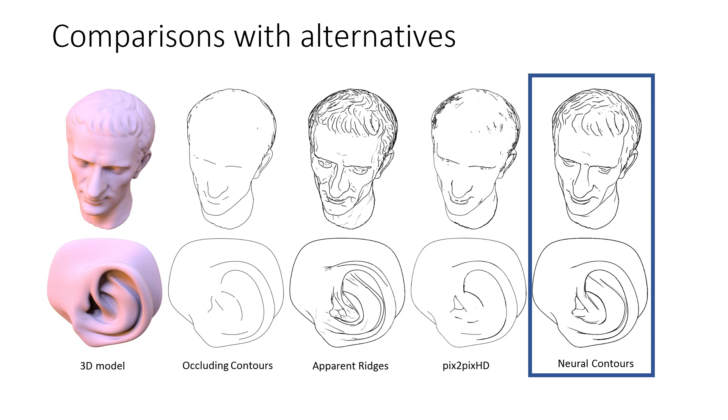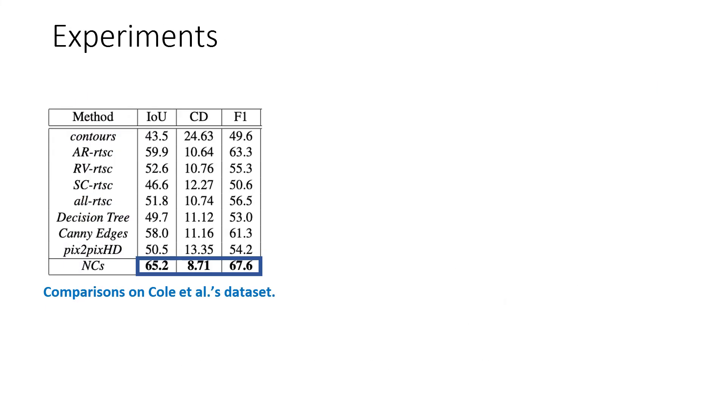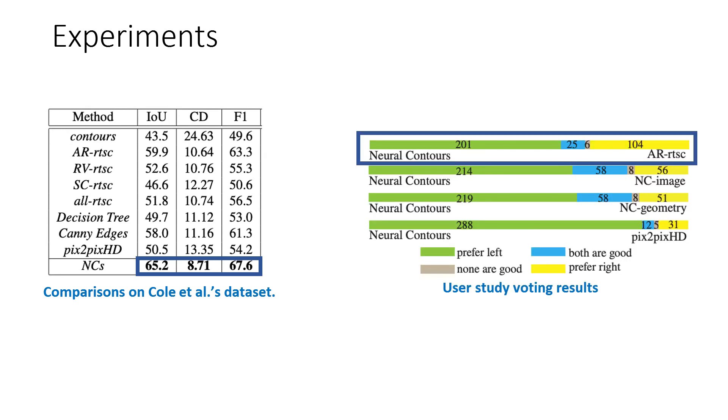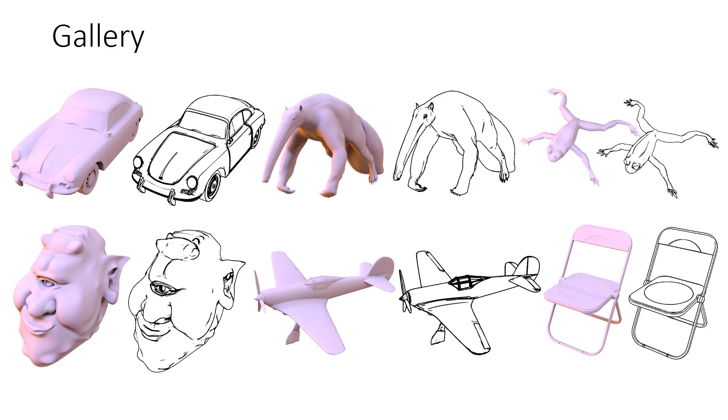Neural Contours, shown on the right, convey the shape much better than prior methods. Based on all evaluation metrics, we produce the best results also validated with a user study. Please see our paper for more results and our project page.